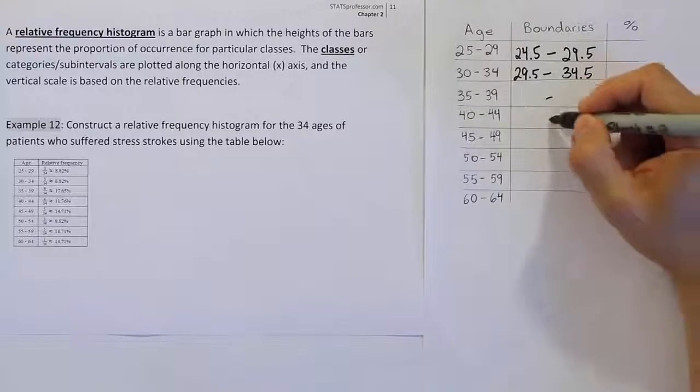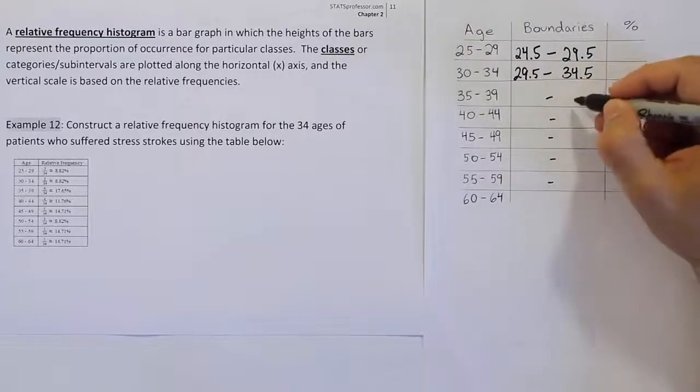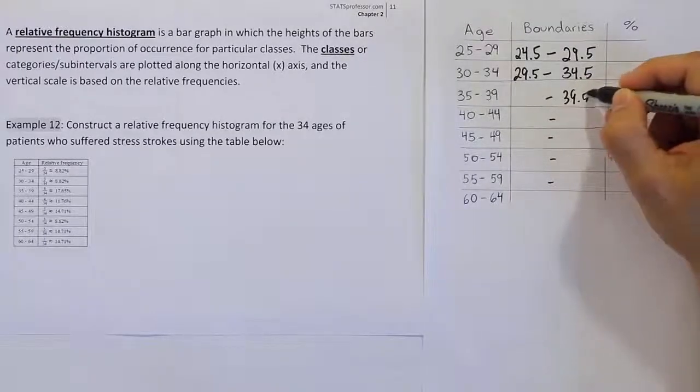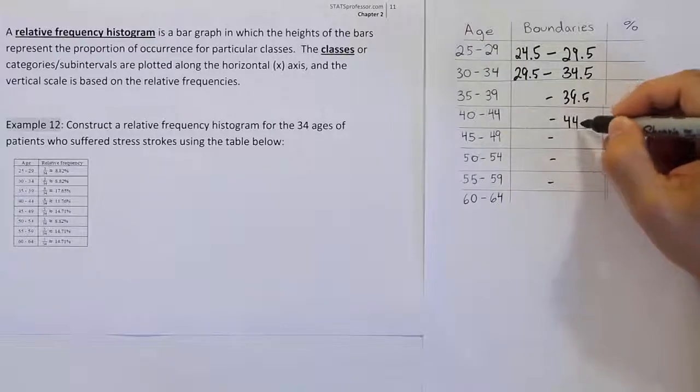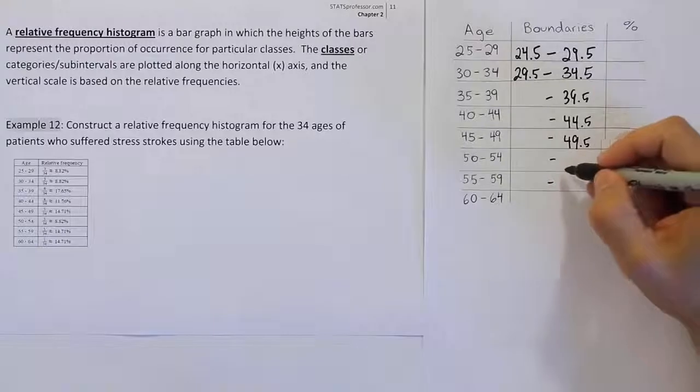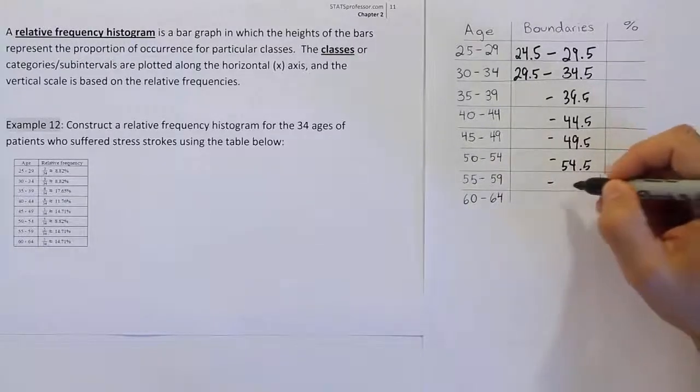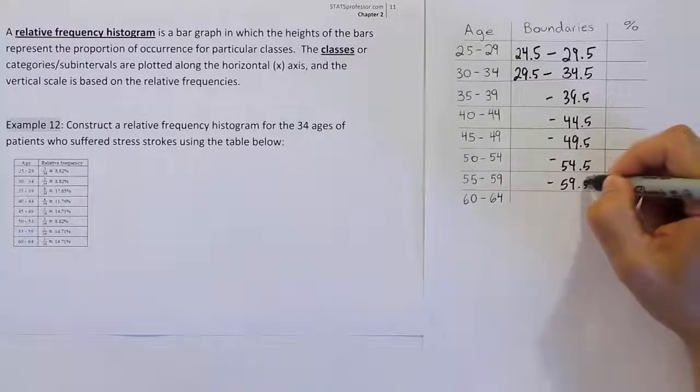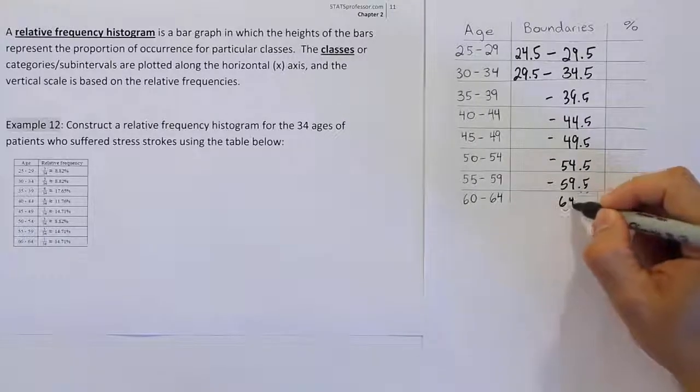To speed this up, I'm just going to do the rest of them very quickly. This will become 39.5, this will become 44.5, this is going to be 49.5, then 54.5, then 59.5, and lastly 64.5.